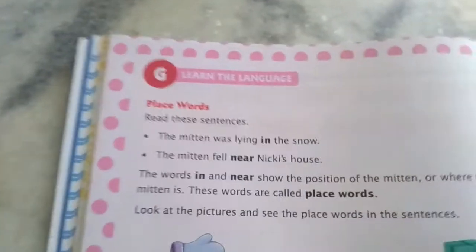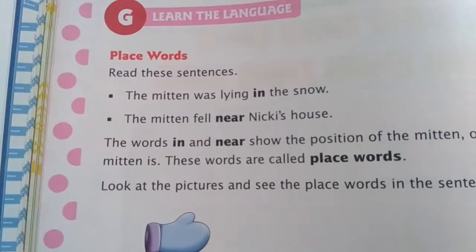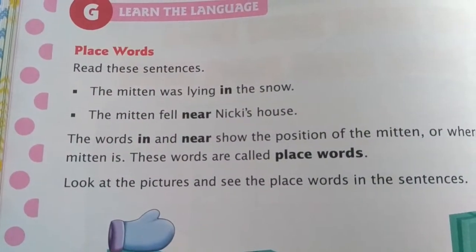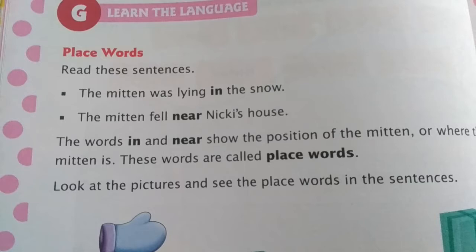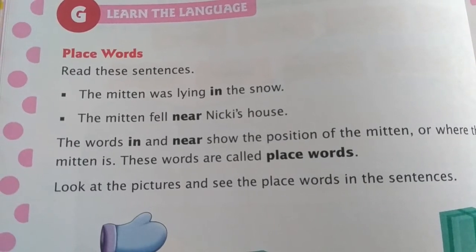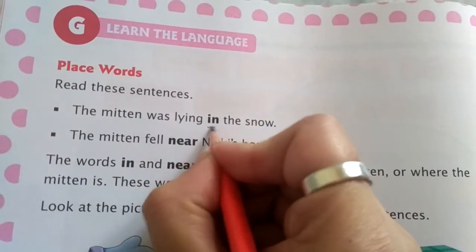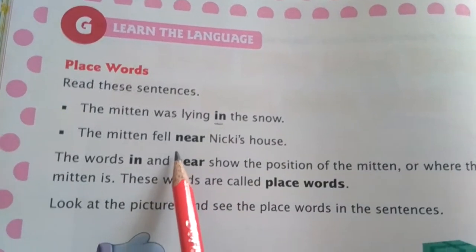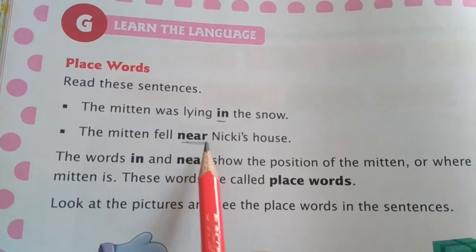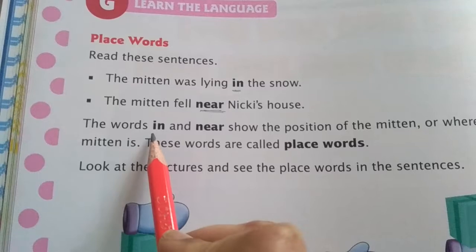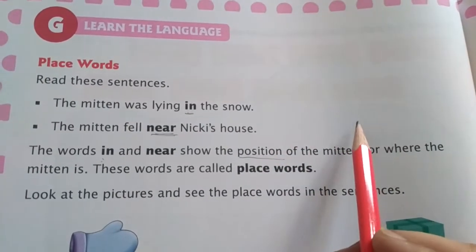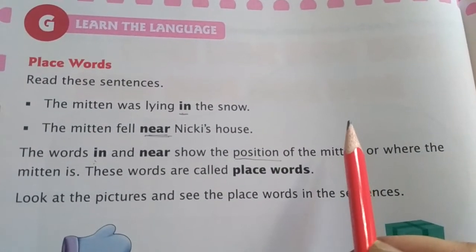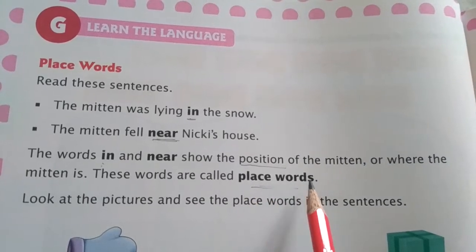Now learn the language part. We will learn about place words. First, there are some sentences given. The mitten was lying in the snow — here 'in' is highlighted. The mitten fell near Mickey's house — 'near.' So the words 'in' and 'near' in these sentences — what are they showing? They are showing the position of the mitten, the place of the mitten. They are telling us exactly where the mitten is. These are known as place words.